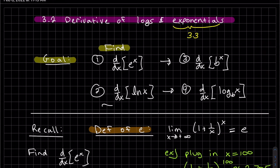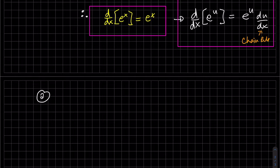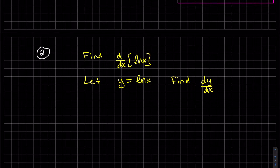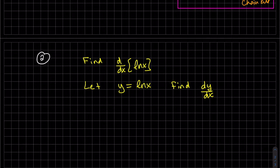That was our first one. Our second one is the natural log of x. Now we can use the definition of the derivative again, but I'm not going to — I'm going to use some techniques we'll be using in this course. I'm going to use a technique from the last section and find it implicitly. The x's and y's are not mixed up here, but let's use what we know: we know the derivative of e to the x is e to the x.